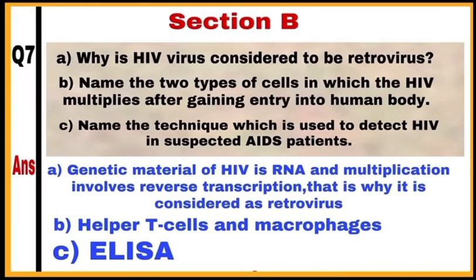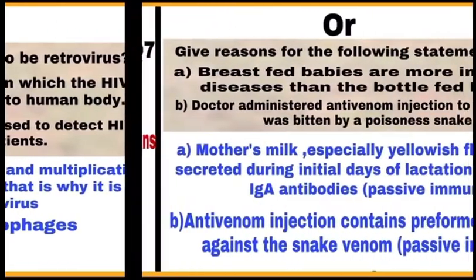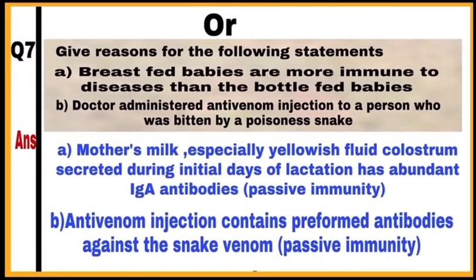Section B, question 7. Learn the various techniques used to detect diseases. There is a choice in question number 7 — it is based on passive immunity.